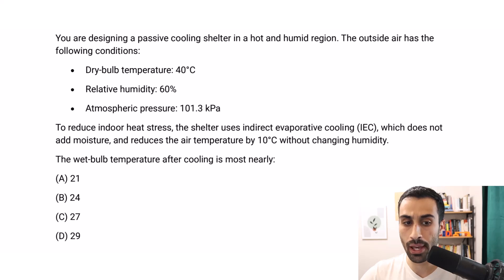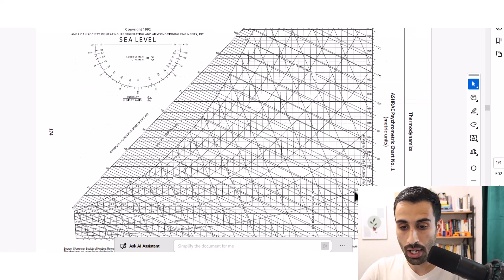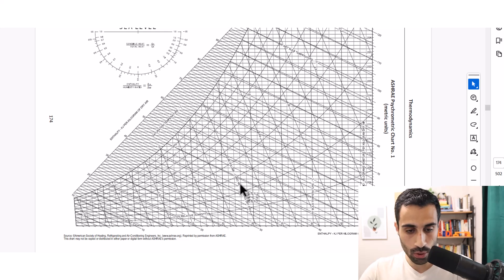This is the before state, and I'm going to plot that for us to help us see where that is as a state on the psychometric chart. So if I follow, we're going to go to 40°C dry bulb temperature. That's what we have before we use the system.